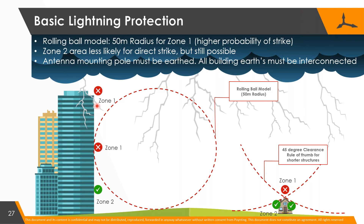Do not believe that on certain high structures, mounting away from the top will protect you against lightning. The rolling ball is the most accurate approach. For short structures, your 45-degree rule - which says if something is at 45 degrees from either side you'll be protected - is quite true, but only if it's a small structure.